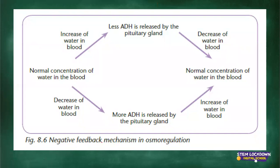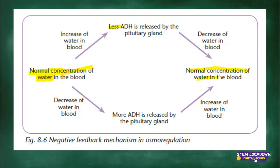This is the diagram showing the negative feedback mechanism in osmoregulation. At the centre you have your normal concentrations of water. When there is an increase of water in the blood, less ADH is released by the pituitary gland. When less ADH is released, the water is not reabsorbed by the collecting tubules. That causes a decrease in water in the blood because it is not reabsorbed — it is just excreted. Then there will be a decrease of water in the blood and it returns to normal concentration.